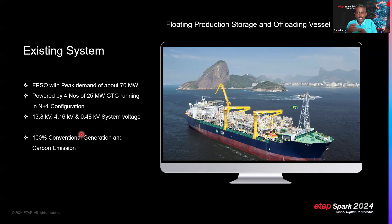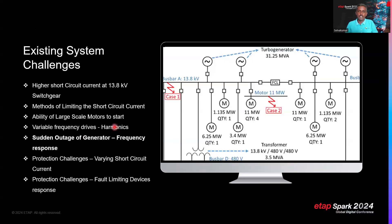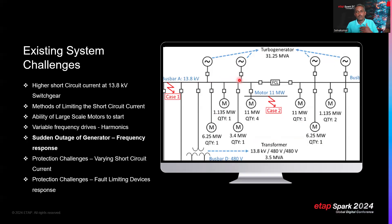Looking in more depth at the existing system: there are four 25-megawatt gas turbine generators at 0.8 power factor, 31.25 MVA, on a 13.8 kV bus. With all generators connected to a common bus and large-capacity motors — including four 11-megawatt and one 6.25-megawatt motor — direct-online starting injects huge short-circuit current. This can push the 13.8 kV switchgear short-circuit level beyond the 50 or 63 kA maximum rating, requiring fault-current limiting solutions.